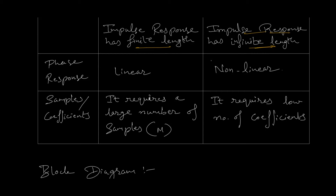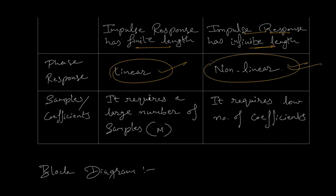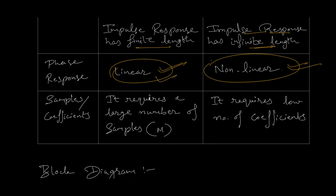If we talk about the phase response, FIR has a linear phase response whereas IIR has a non-linear phase response. We have discussed in detail in the last lecture how linear phase response makes FIR quite compatible for use in medical applications and control applications, as it preserves the shape of the input signal. Whereas IIR filters can be used for RF applications because of their non-linear behavior.